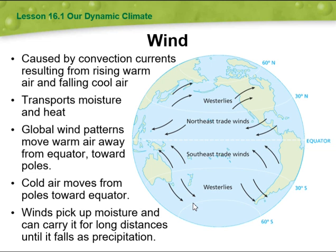Wind is driven by convection currents resulting from rising warm air and falling cool air. It transports moisture and heat, and global wind patterns move warm air away from the equator towards the poles, while cold air moves from the poles towards the equator. Wind picks up moisture and can carry it for long distances until it falls as precipitation. We will be talking about this and much more during this week.